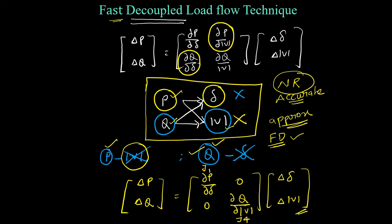These are a few comparisons between the NR and the Fast Decoupled Load Flow method. If you have gone through the NR technique, we used the polar form. Whenever working with load flow analysis, it is better to use polar form instead of rectangular. But in the Fast Decoupled Load Flow technique, we use the rectangular form instead of the polar form.